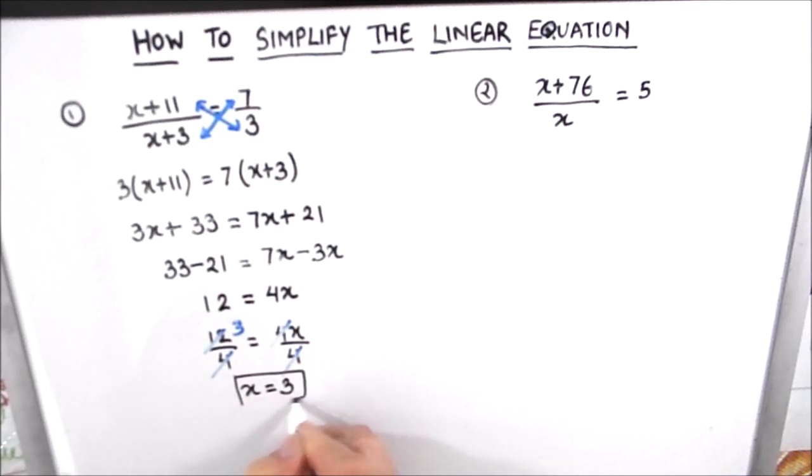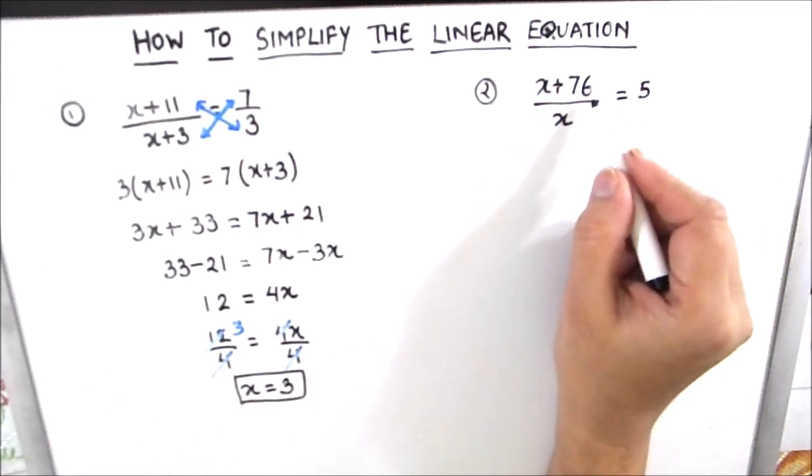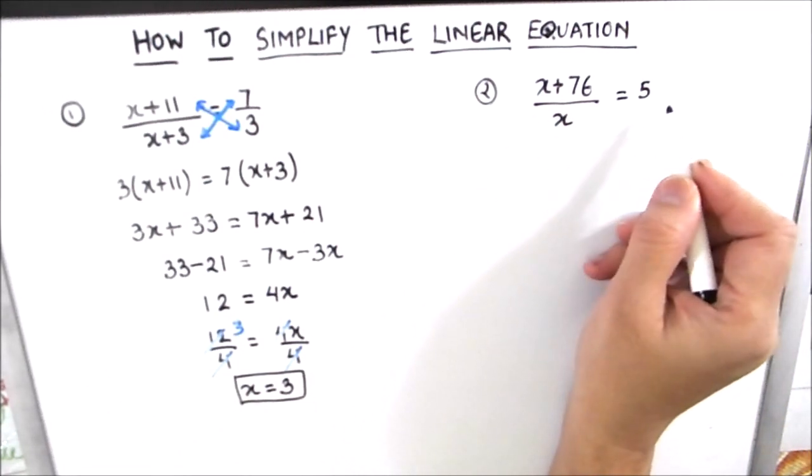So this is how we can solve these type of equations. Let us move on to our second example. Here we have x plus 76 divided by x is equal to 5.